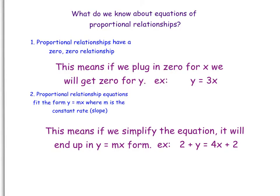So, let's look closely at what we know about proportional relationships. What do we know about equations of proportional relationships? Well, proportional relationships have a 0, 0 relationship. That means, if X is 0, Y has to be 0. So, if we write an equation like Y equals 3X, and we plug in 0 for X, we should get 0 for Y. In this case, we do. 0 equals 3 times 0. We know this is a proportional relationship.